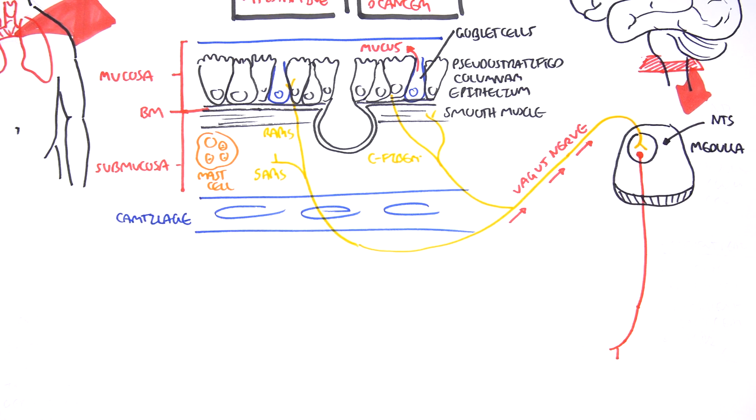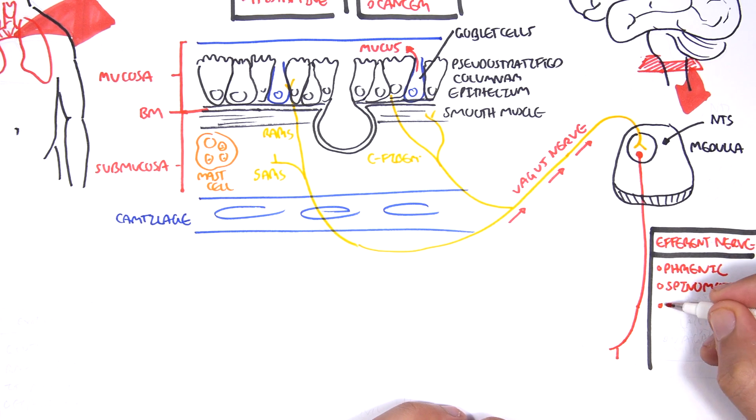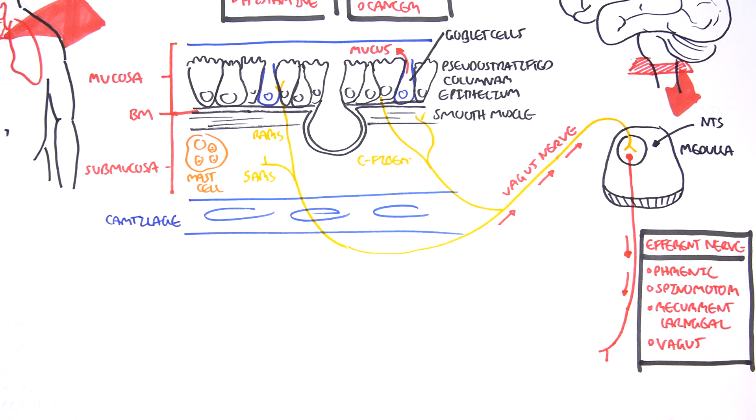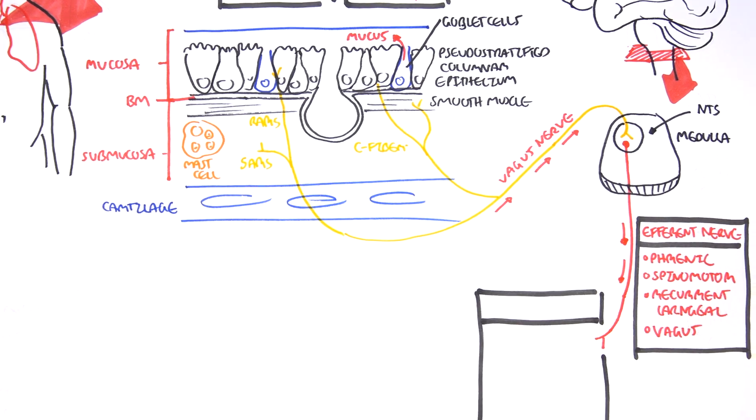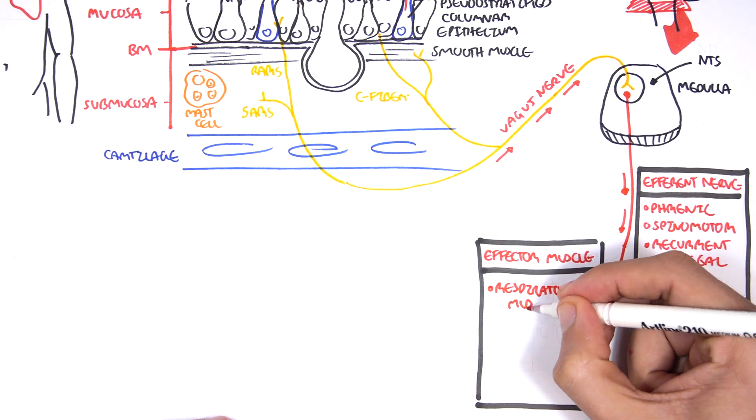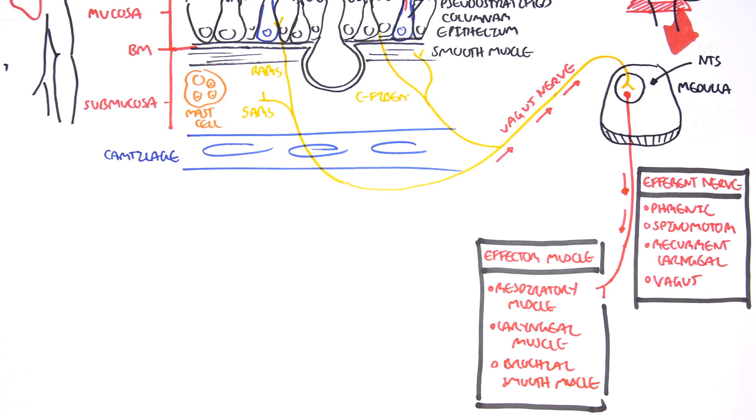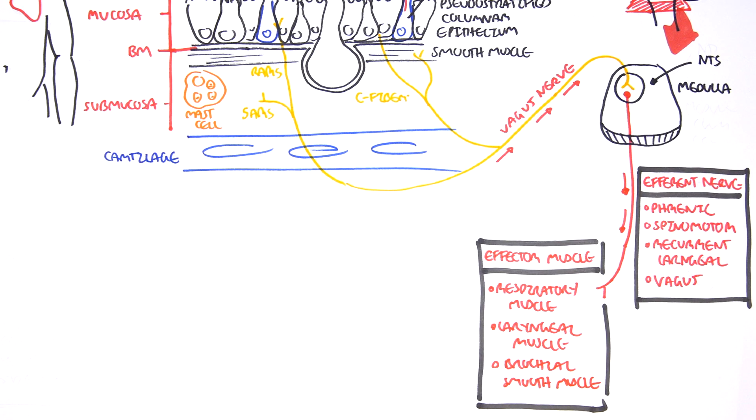Here it will synapse with other neurons, which will trigger the cough reflex. So the vagus nerve synapses with efferent nerve fibers. These efferent nerve fibers can be different types of nerves, but essentially the final efferent nerves are the phrenic, spinal motor, recurrent laryngeal and vagus. These efferent nerve fibers will bring this reflex information to effector muscles. And these effector muscles are the respiratory muscles, the laryngeal muscles and the bronchial smooth muscles.